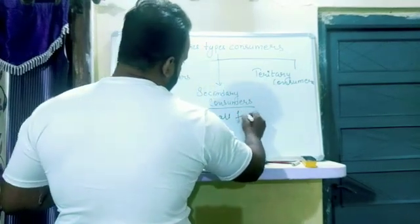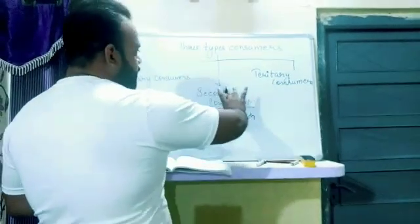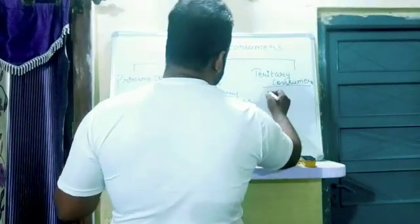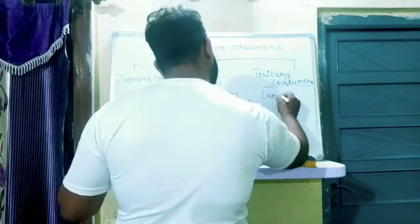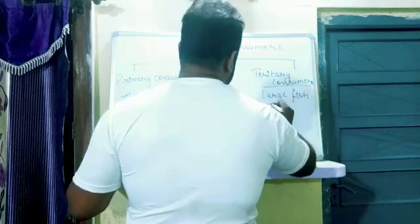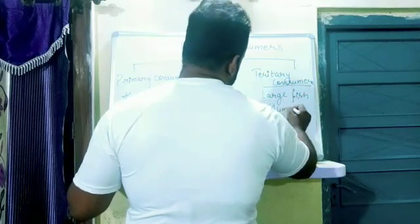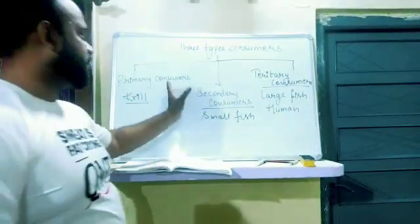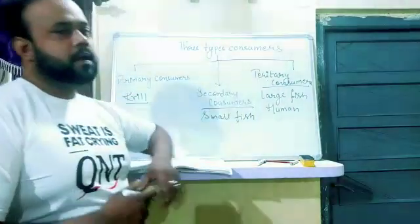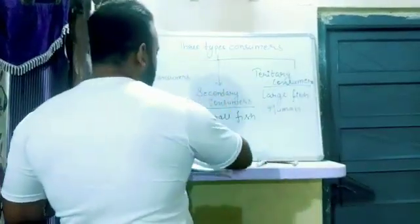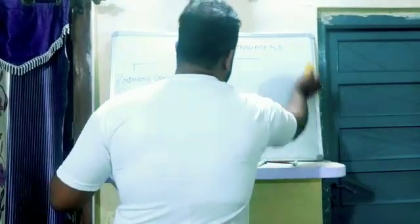After that, secondary consumers are eaten by the tertiary consumers, like large fish and humans. So this is the tertiary consumer. The difference between the consumers — primary consumers, secondary consumers, and tertiary consumers.